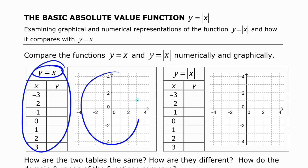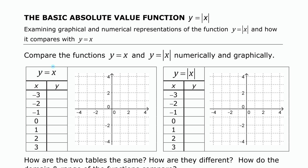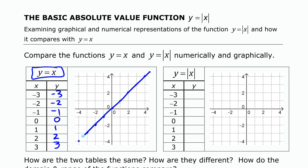We will look at this numerically and graphically for the original y equals x and the new function y equals absolute value of x. For y equals x, that is a pretty easy table to fill out because the y values are the same as the x values. This graph is all points where y and x are the same — that diagonal straight line. The domain is all real numbers.